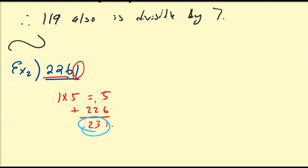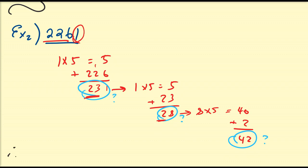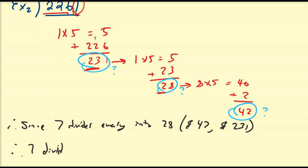I don't necessarily know for sure, so I'll continue the process. Taking the last digit, which is 1, multiply it by 5 — that gives 5 — and add to it the remaining digits 23. So 5 plus 23 is equal to 28. Is 28 divisible by 7? Let's assume you don't know, so take the last digit 8, multiply by 5 to get 40, add the remaining digit 2: 40 plus 2 is 42. You may know that 42 and 28 are both divisible by 7, so you could have stopped at 28. Therefore, since 7 divides evenly into 28 and 42 and 231, that means 7 divides evenly into 2,261.